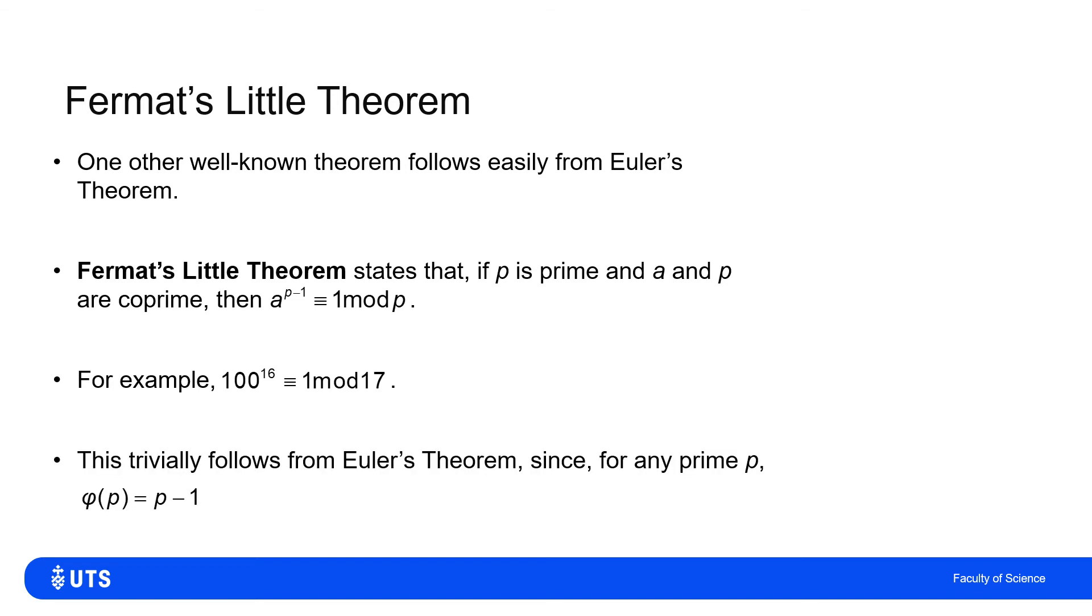And that just follows trivially from Euler's theorem, because if I pick any prime p, then I know that phi of p is p minus 1. So just putting that result in, and I instantly get Fermat's little theorem.